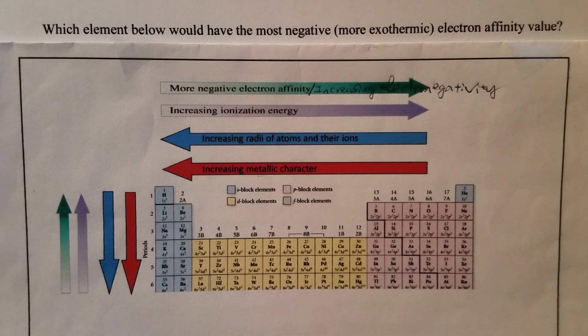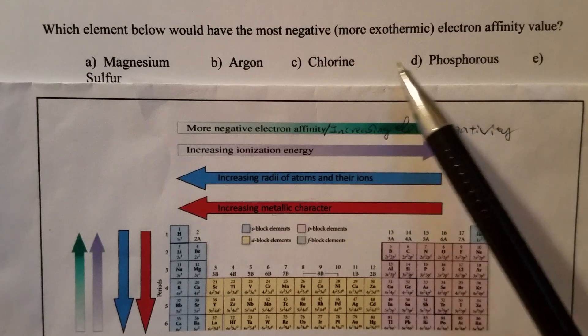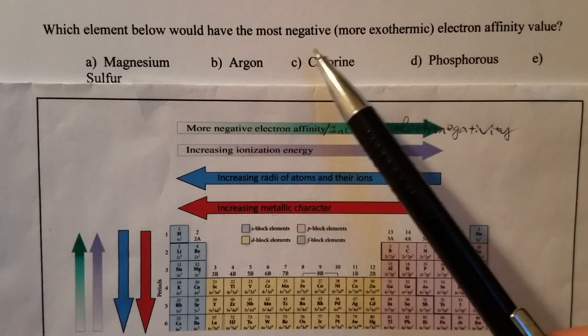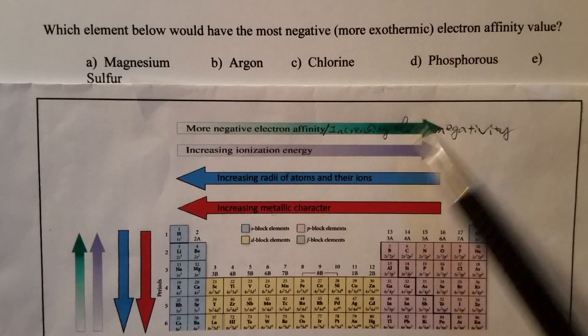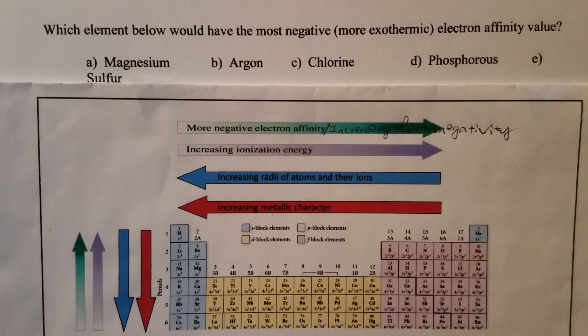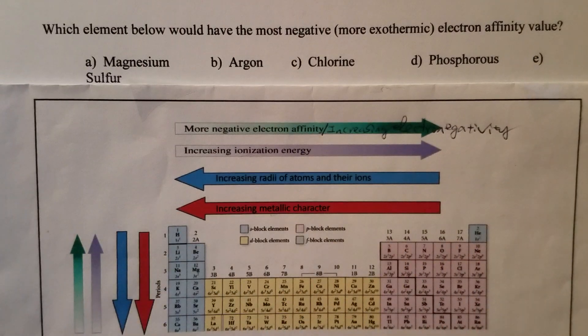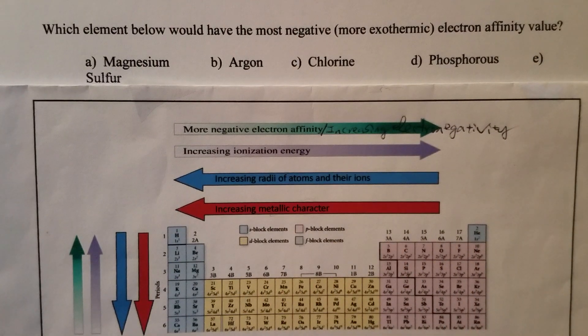Next we just need to find out those different elements in the periodic table, then we can apply this arrow analysis to find out the answer.